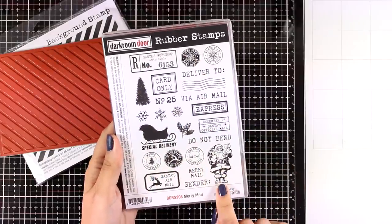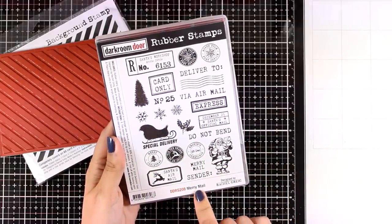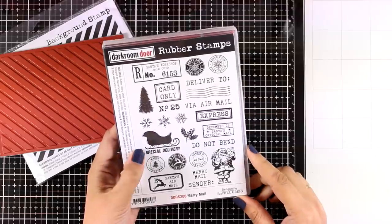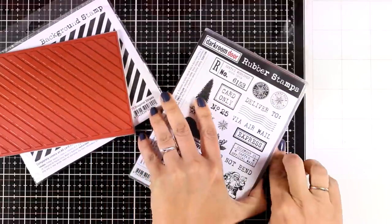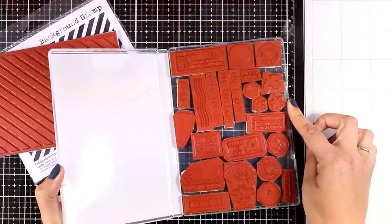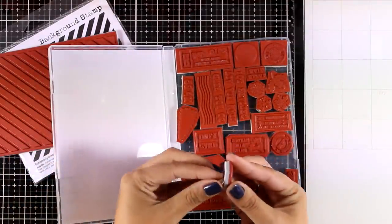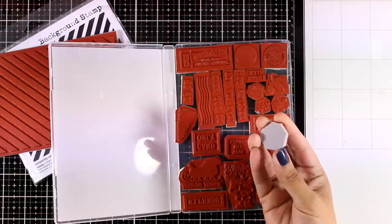And here is another stamp set which I absolutely adore, this is called Merry Mail and it is packed with lovely images as well as lots of sentiments. These are rubber stamps that cling on your stamping block and they come with this case so you can store them nicely.